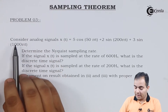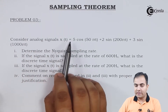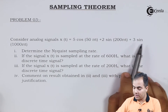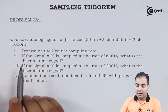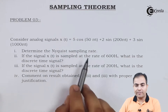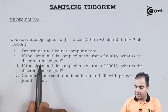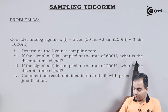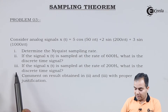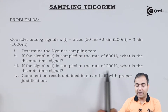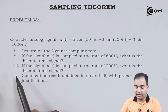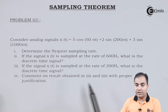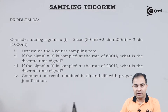Problem number 3: Consider the analog signal x(t) = 5cos(50πt) + 2sin(200πt) + 3sin(1000πt). We need to: first, determine the Nyquist sampling rate; second, find the discrete time signal when x(t) is sampled at 600 Hz; third, find the discrete time signal when sampled at 200 Hz; and fourth, comment on the results from parts 2 and 3 with proper justifications.